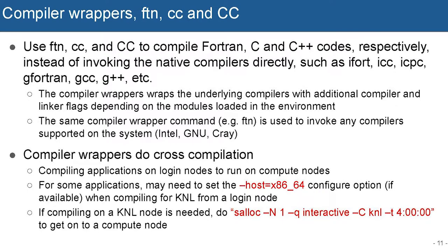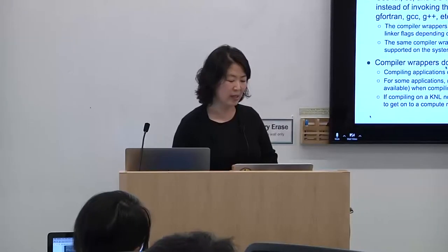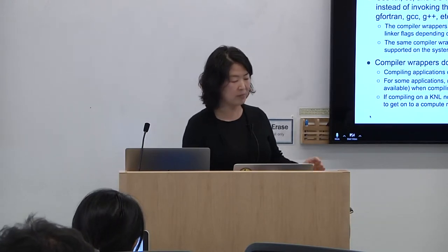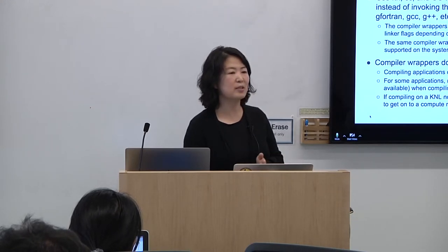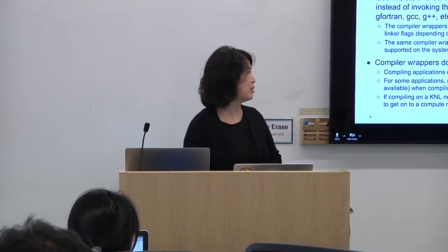The compiler wrappers wrap the native compiler call and do many things for you. Depending on what modules are loaded in your environment, they pick up libraries and paths automatically and put them in your compile link line. One thing to know is that the wrappers do cross-compilation. If you compile from the login node — a Haswell node — for the Haswell compute node, that's fine. But if you build for KNL, some packages' configure scripts do a compiler check by building a small binary and running it on the host machine.